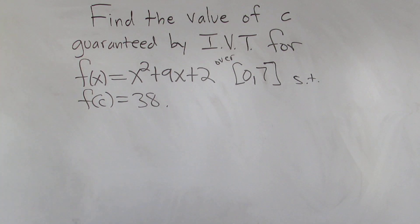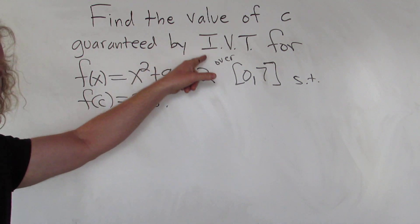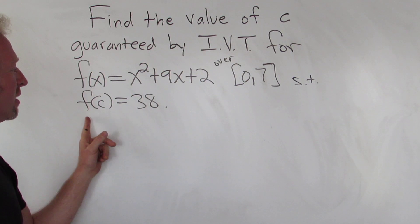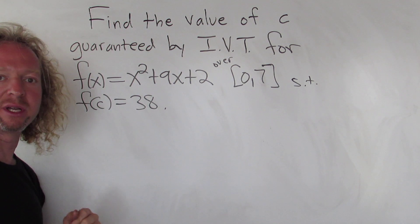Find the value of c guaranteed by IVT, that stands for Intermediate Value Theorem, for this function over this interval, such that f of c equals 38.